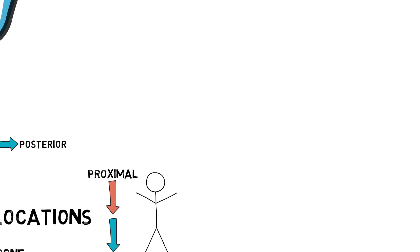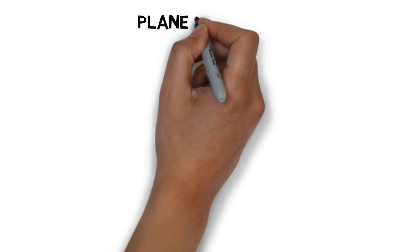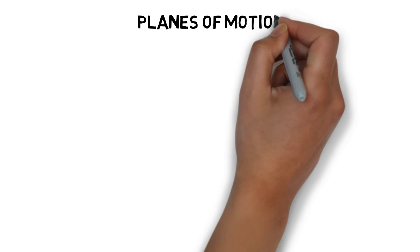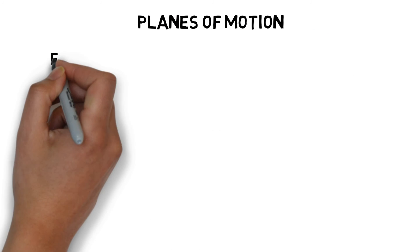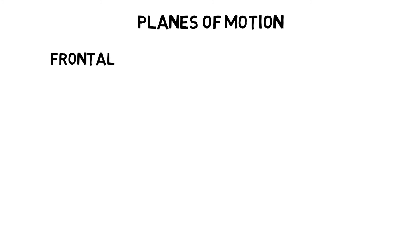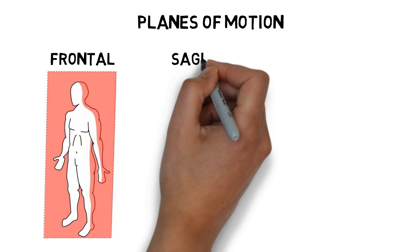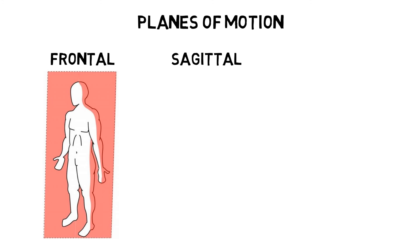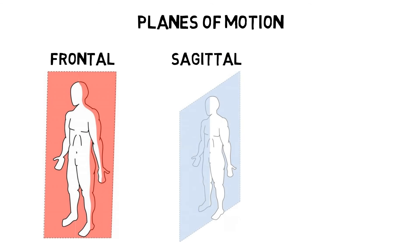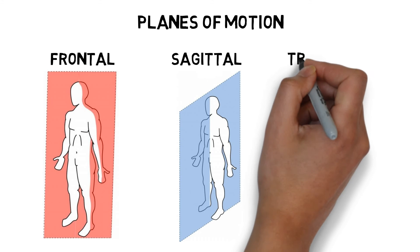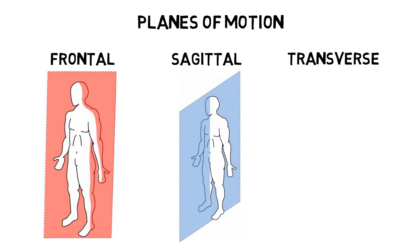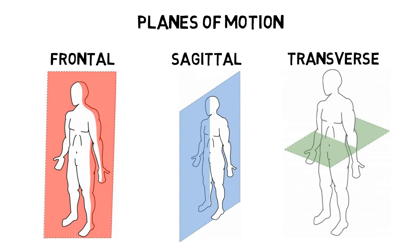We can describe all human movement in three imaginary planes that pass through the centre of the body. The frontal plane creates front and back halves and includes movements such as a side lunge. The sagittal plane divides the body into left and right halves and includes movements such as running forward. The transverse plane creates upper and lower halves and includes movements such as swinging a bat.